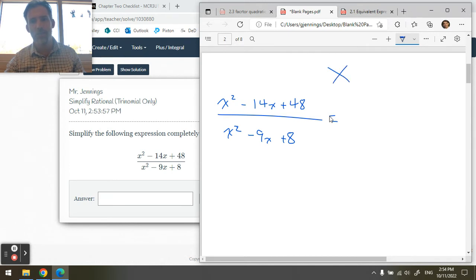Multiplies to 48, adds to negative 14. This will be two negative numbers. 12 times 2, that won't do it. What about 10 times 4, that won't do it. Maybe 8 times 6, aha! Negative 8 times negative 6. So that factors into x minus 6 multiplied by x minus 8.